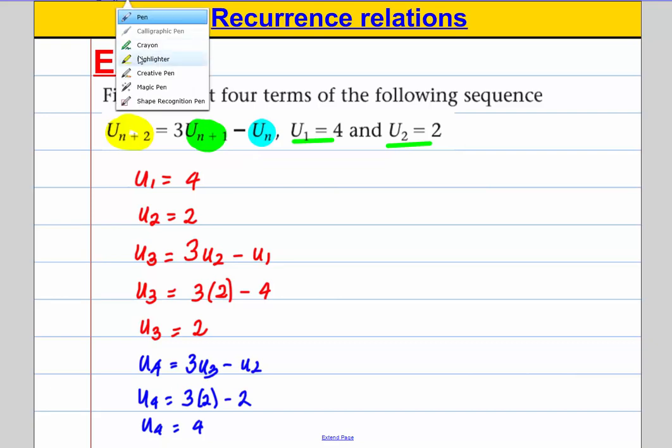And we have our first four terms. u1 is 4, u2 is 2, u3 is 2 and u4 is also equal to 4. And we are done in that case. And we have done the easy scenarios.